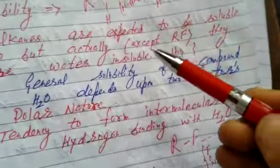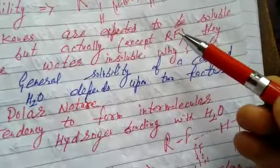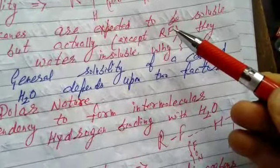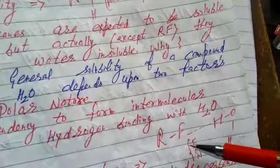Now in haloalkane, if it is chloroalkane, then X will be Cl. If it is bromoalkane, X will be Br. If it is iodoalkane, X will be I. It means chlorine, bromine, iodine, they don't participate in hydrogen bonding.